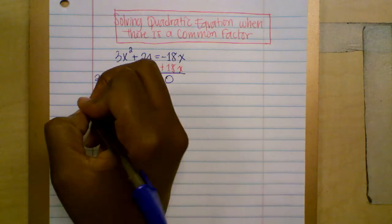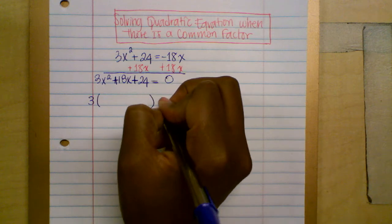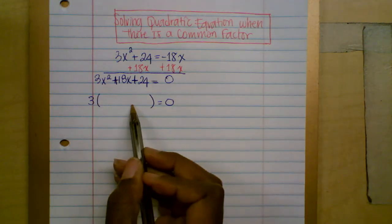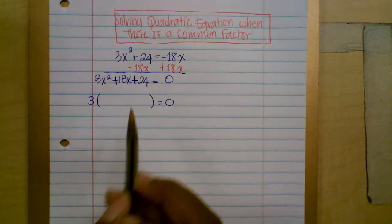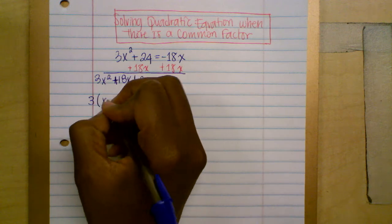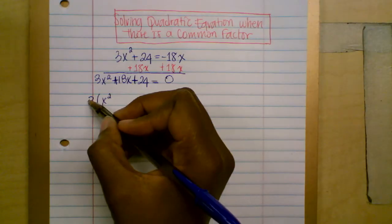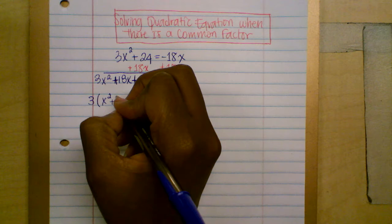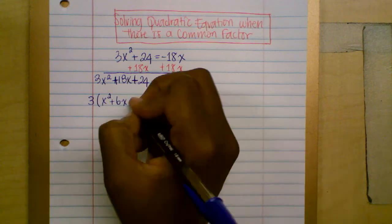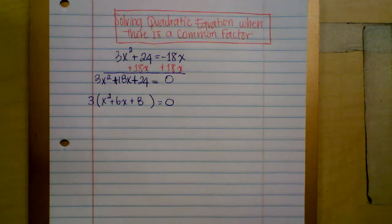So let me pull out the 3. Inside the parentheses: 3x² divided by 3 is x², 18x divided by 3 is plus 6x, and 24 divided by 3 is plus 8.